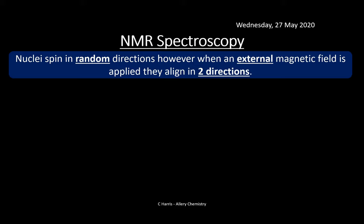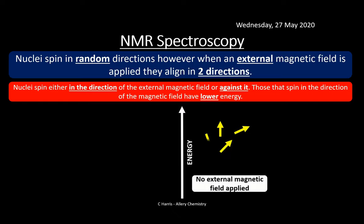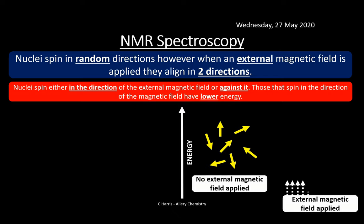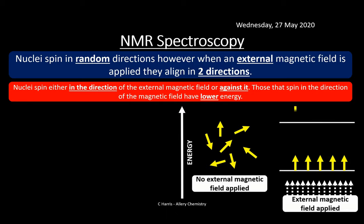Nuclei spin in random orientations — clockwise or anticlockwise — when there's no external magnetic field. But when we apply an external magnetic field, the nuclei align either with the field or against it. The ones that align against the field have a higher energy level, and the ones at the bottom align with the field and have lower energy.